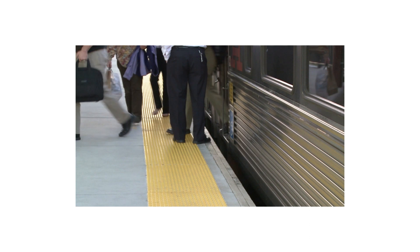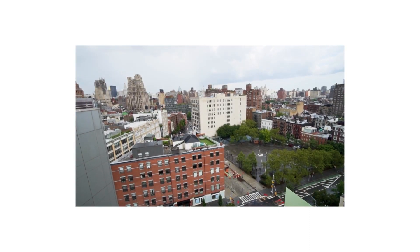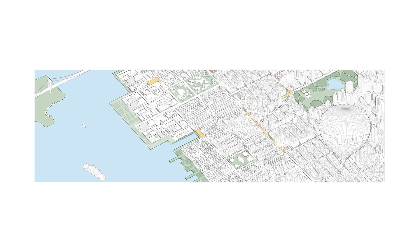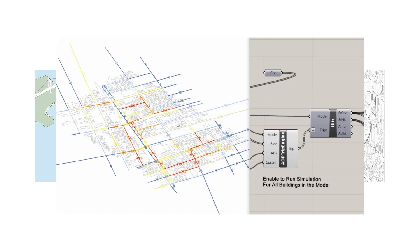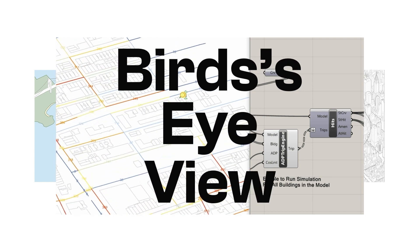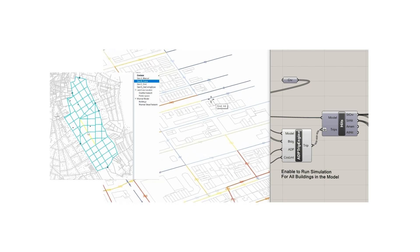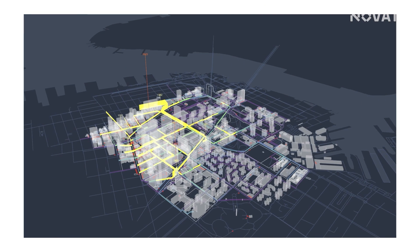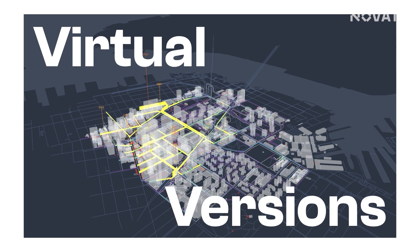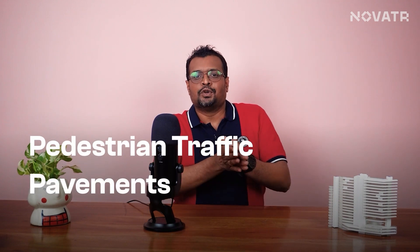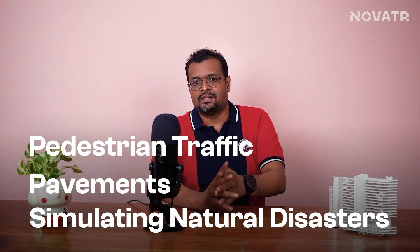CD tools dig through a lot of data about where people live, how they get around, and what the environment is like. Then they crunch it all and present it in a clear picture for urban planners — giving them a bird's eye view of what's happening in their city. These tools also help simulate and model different scenarios. CD lets us build virtual versions of our cities to see how different changes might pan out, predicting everything from pedestrian traffic to pavement layout, or even simulating natural disasters.